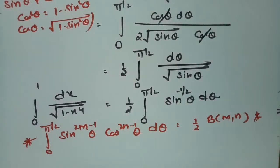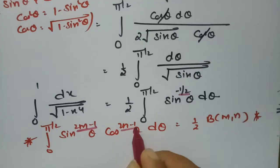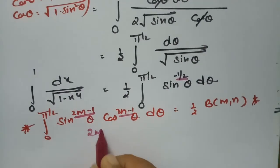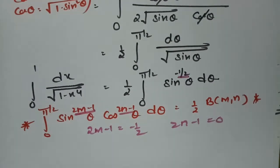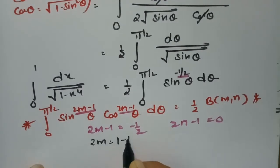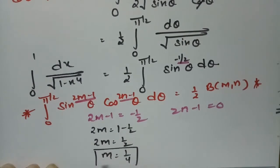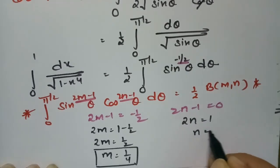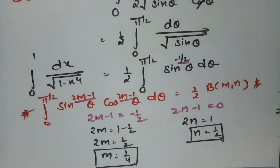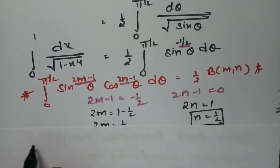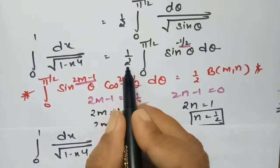Comparing with the formula, in place of 2m − 1 we have −1/2, and in place of 2n − 1 we have 0. So: 2m − 1 = −1/2 gives 2m = 1/2, hence m = 1/4. And 2n − 1 = 0 gives 2n = 1, hence n = 1/2.